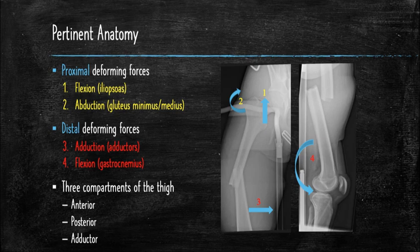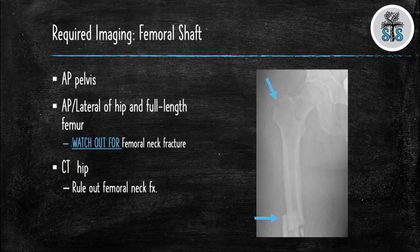When evaluating femoral shaft fractures, you should obtain an AP pelvis, and AP and lateral views of the hip and femur. Pay particular attention to the femoral neck looking for any fracture as previously discussed. You will also want to obtain a CT of the hip. On the right you can see a nice example of a femoral shaft fracture with a concomitant femoral neck fracture.